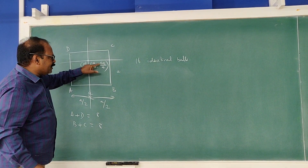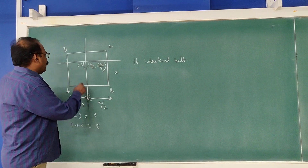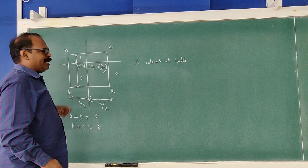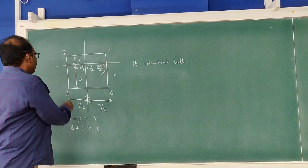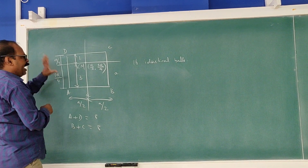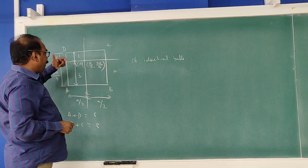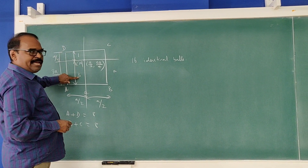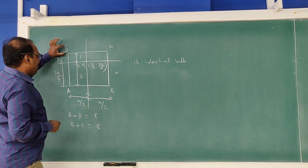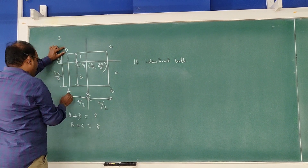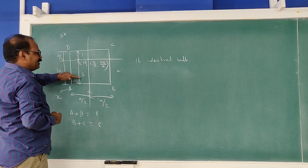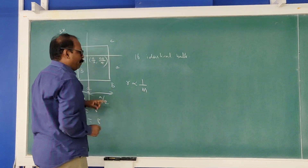Now see the Y coordinate — this is 3A/4. That means the distance ratio is 1 to 3: this side is A/4 and this side is 3A/4. Total is A. So the ratio is 1 to 3. When the distance is 1 to 3, the mass should be 3 to 1. Therefore, if the mass at one corner is X, here it should be 3X. The distance ratio is inversely proportional to the mass ratio.